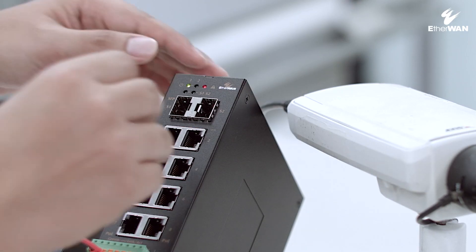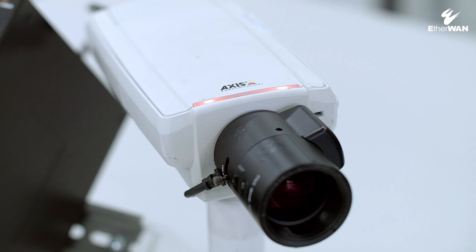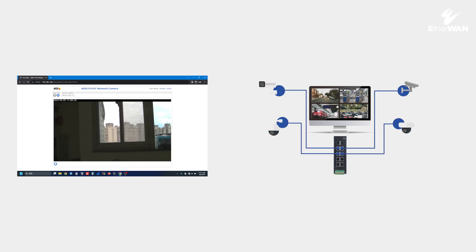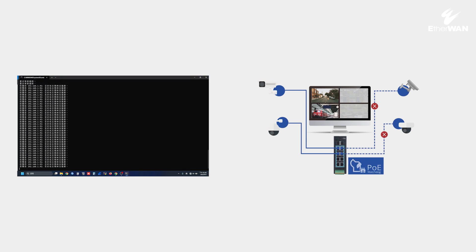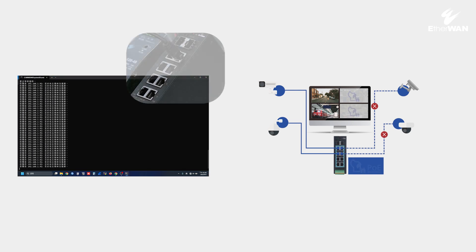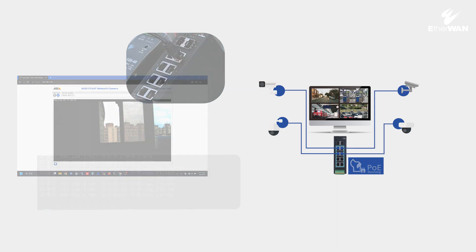After the port with enabled watchdog function is connected to the powered device, it will start to continuously detect the operating status of the PD. When the powered device crashes abnormally and there is no response for more than 30 seconds, the PoE Watchdog function will automatically activate. The AutoE will turn off the power of this port so that the connected PD device can be restarted.